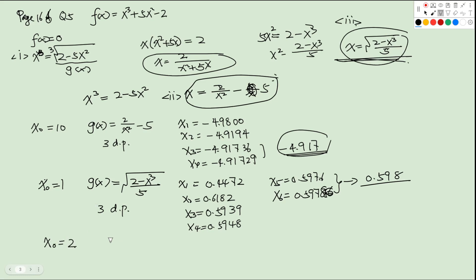If we try x0 = 2 with this g(x), then x1 = √((2 - 8)/5), which is the square root of a negative number. Since this is undefined, we can't use this starting value to build up the sequence.